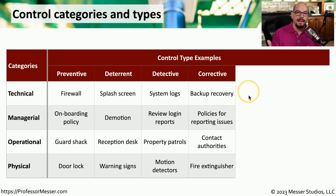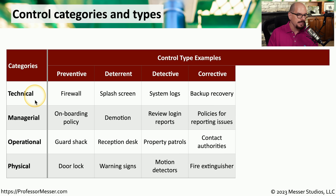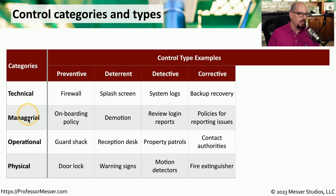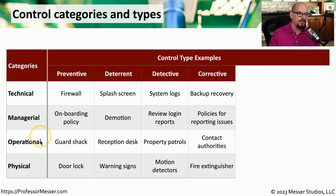Those are four events that fit into the four categories. Recovering from a backup would be a technical category. Having policies for reporting issues when they occur would be in the managerial category. Contacting authorities for some type of legal issue would be an operational category. And your fire extinguisher is a physical category.